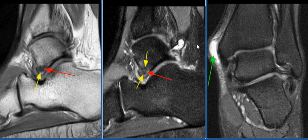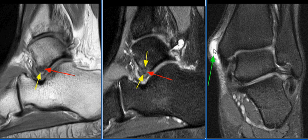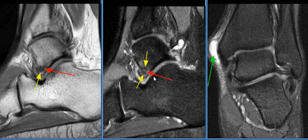There is mild scarring of the calcaneofibular ligament. Overlying the medial malleolus, there is a thick-walled fluid-filled adventitial bursa consistent with bursitis, with adjacent soft tissue edema. MR findings are consistent with a snowboarder's fracture and medial malleolus bursitis.